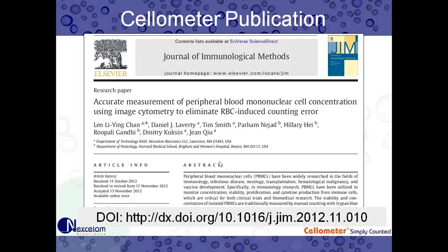This data is actually published in a paper we collaborated on with the Department of Neurology at Harvard Medical School, Brigham and Women's Hospital in Boston. This paper, published in the Journal of Immunological Methods, is a great reference on how PBMC counting is best done using the AOPI fluorescence assay. I put the digital object identifier there for anyone who wants to look it up after the webinar.